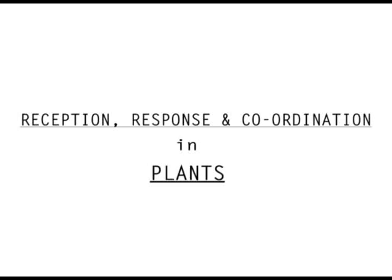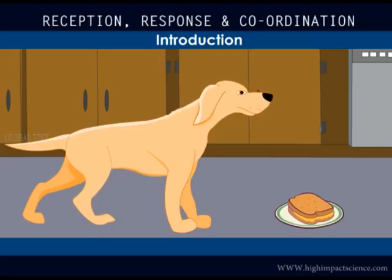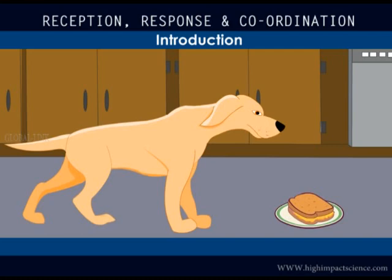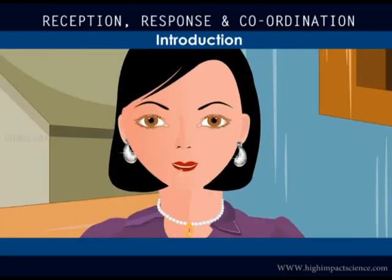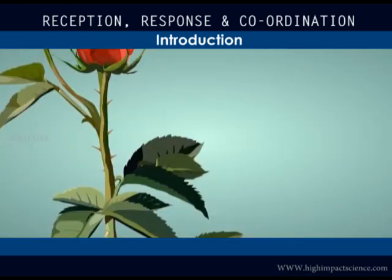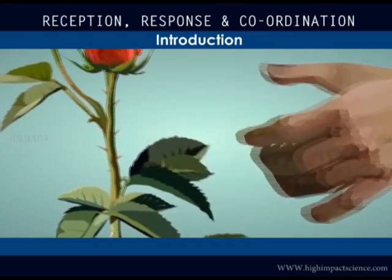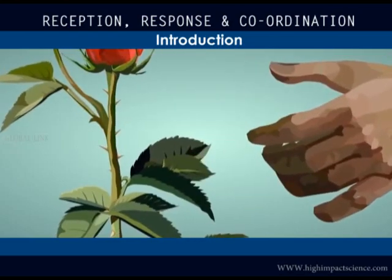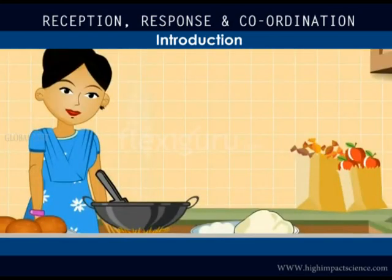Next chapter: Reception, Response and Coordination in Plants. All organisms respond to external stimuli. When a strong and bright light falls on our eyes, we close them. When a thorn pricks our finger, we immediately retract our hand. When we accidentally touch a hot object, we immediately withdraw our hand.